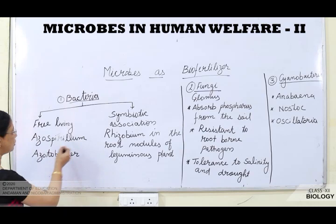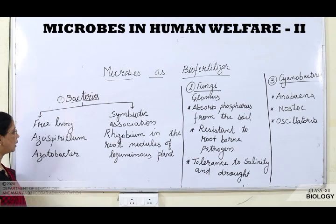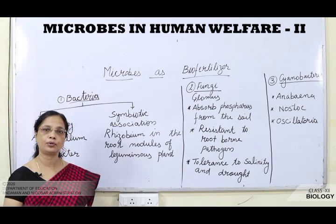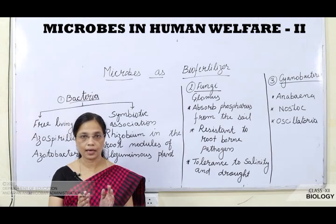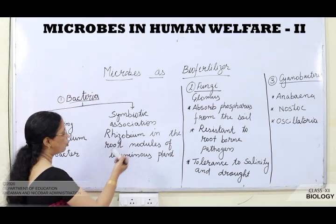Bacteria used as bio-fertilizers can be divided into two types. Free-living bacteria live in the soil and fix atmospheric nitrogen, enriching soil nutrients — examples are Azospirillum and Azotobacter. The second type is symbiotic association — a mutual relationship between two organisms where both are benefited. The classic example is Rhizobium and root nodules of leguminous plants such as pulses.